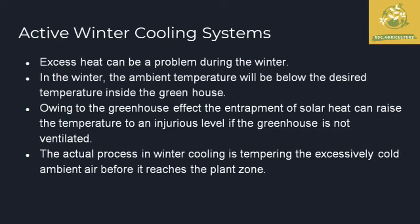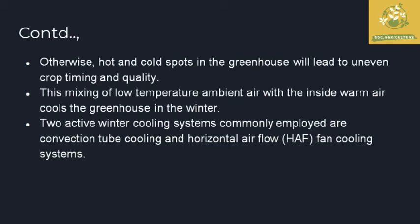When ventilation is done, the solar heat will escape. In the actual process of winter cooling, excessive cold ambient air will reach the plants and the solar heat will be maintained. In the active winter cooling system, the important principles are maintained. However, cold spots can form in the greenhouse, and the quality of the crops can be damaged. Therefore, the active winter cooling system must be carefully managed. By mixing low-temperature ambient air with the inside warm air, the greenhouse achieves a cooling effect. The two methods are convection tube cooling and horizontal air flow cooling.